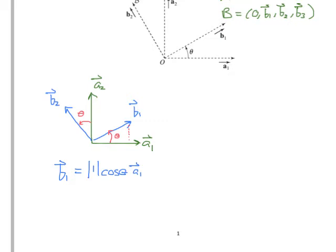Next we'll find the A2 component of B1. We project B1 onto the A2 axis. This will be the magnitude of 1 and then multiplied by sine theta in the A2 direction. We get rid of the magnitude 1s and then end up with the final expression where B1 is equal to cosine theta A1 plus sine theta A2.